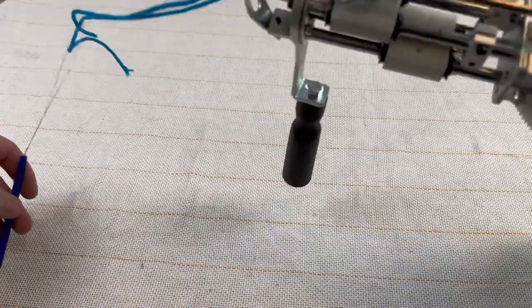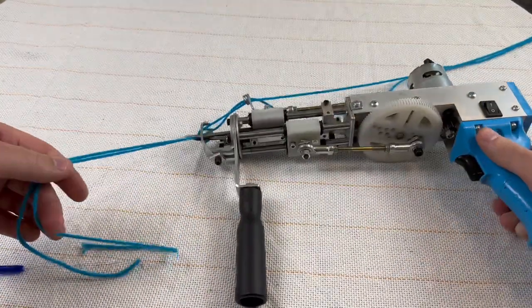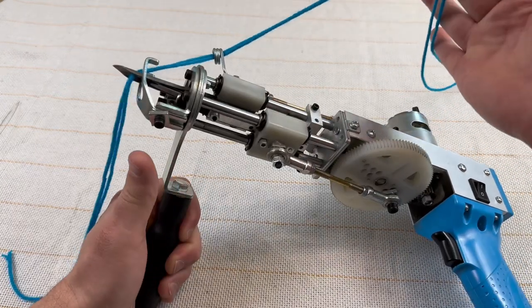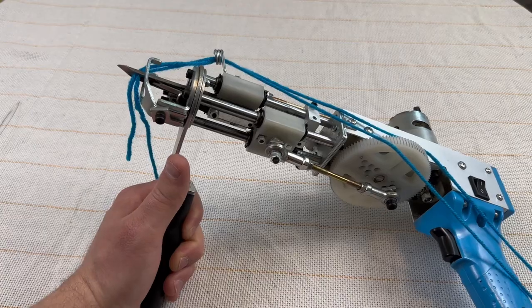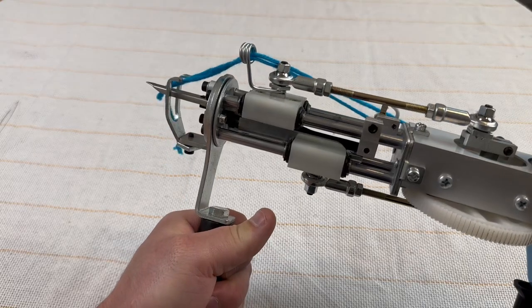There's a piece on the gun that I'll show you how to adjust in order for that to not happen anymore. As you can see here while I'm pulling it, it slides out super easily.